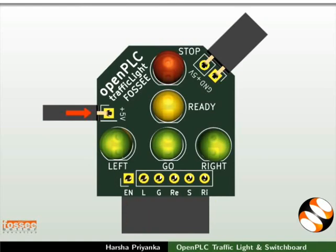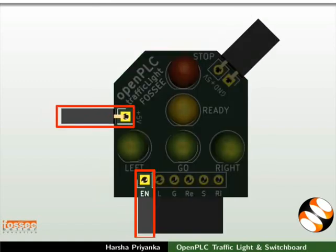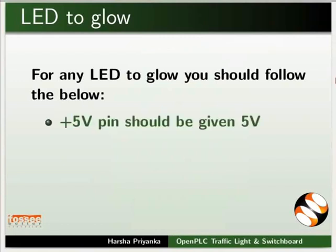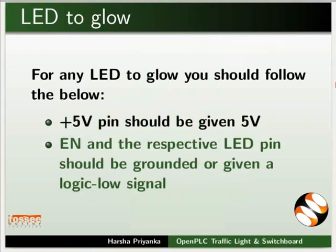To the left of the yellow LED we can find a connector marked plus 5V, which is the power pin of the module. None of the LEDs glow unless you make two required connections. For any LED to glow, the plus 5V pin should be given 5V, and the EN pin and the respective LED pin should be grounded or given a logic-low signal.